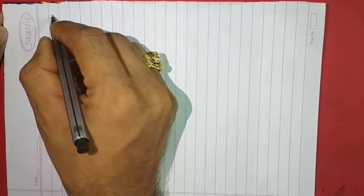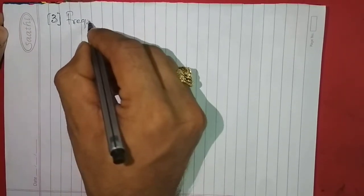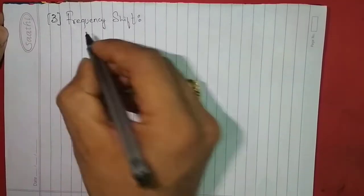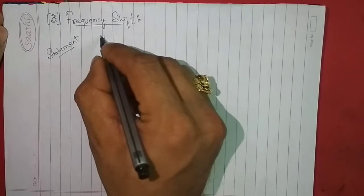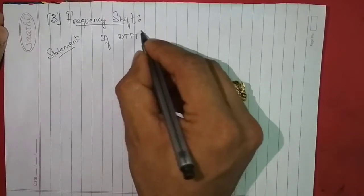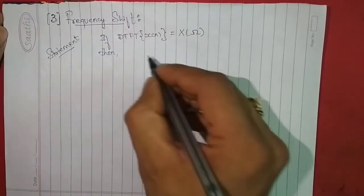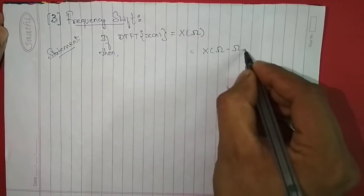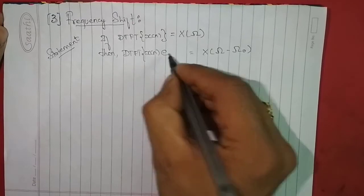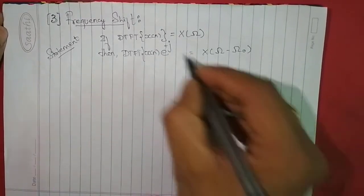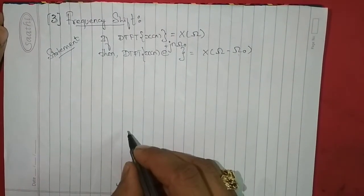Hi guys, we shall try to prove the frequency shift property of DTFT. Its statement says that if DTFT of x(n) is equal to capital X(ω), then if I shift a signal in the frequency domain by ω₀ — that is X(ω - ω₀) — then in the time domain, x(n) gets multiplied with e to the power of +jnω₀. This is the statement we will try to prove.